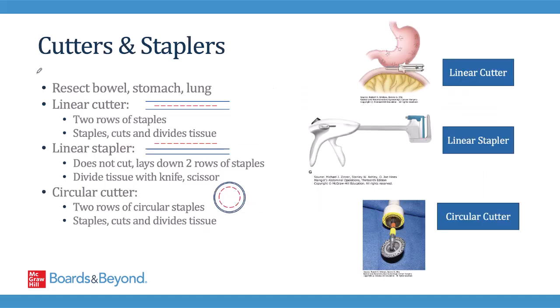Sometimes the tissues we're tasked with unifying are part of hollow organs like the intestine, stomach, or the lung, and these hollow organs allow intestinal content or respiratory secretions to pass through. These secretions aren't benign — what's carried in the bowel and the stomach is stool — so when we're connecting these tissues together, we want to make sure the connection is airtight and that there is no leak. You can't go wrong using a needle driver and suture to bring these tissues together, but sometimes, if it's safe to do so, it's more ergonomic and efficient to use something like a cutter or a stapler.